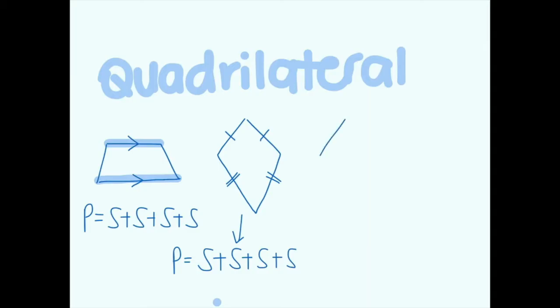For a rhombus, which is a type of kite but with all sides the same, you can do 4s—4 times s, so 4 times the exact same size side—or you can add the sides up.